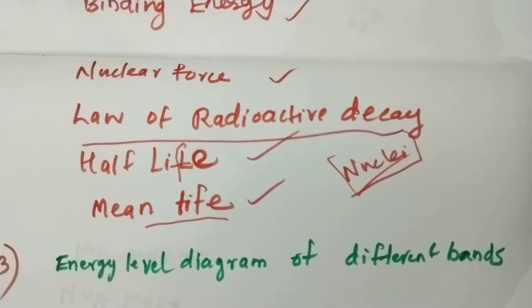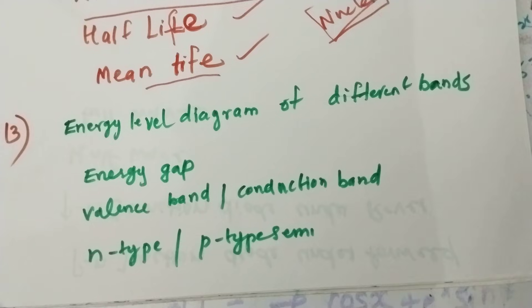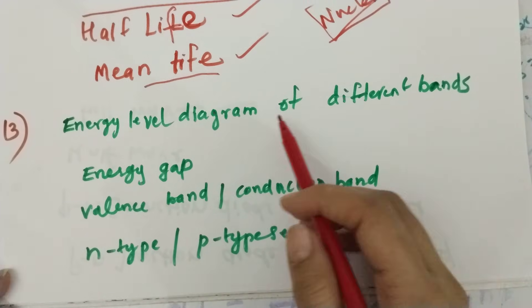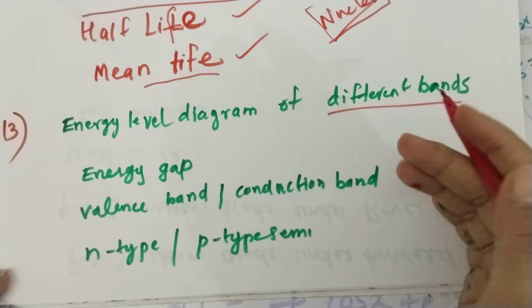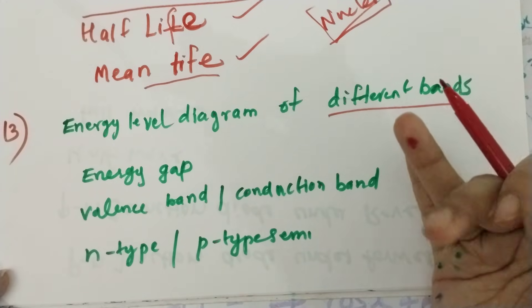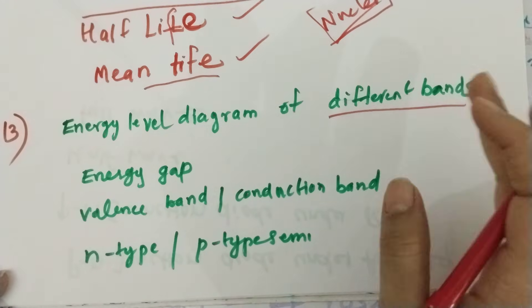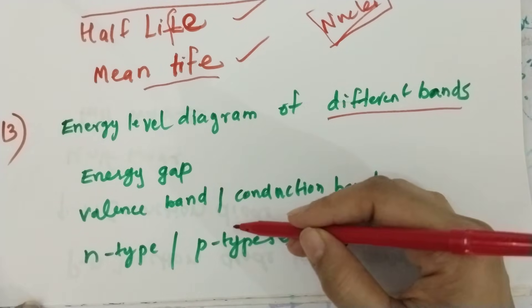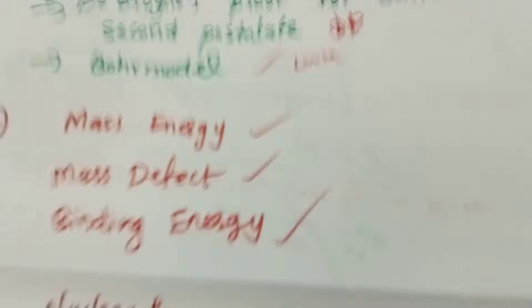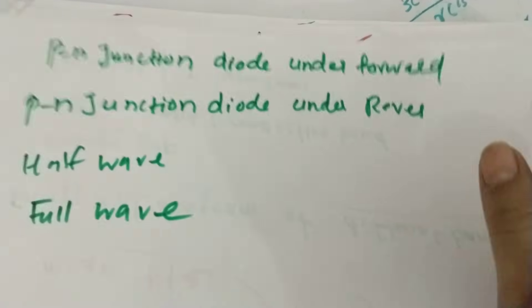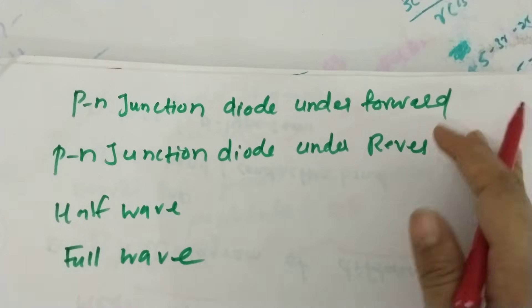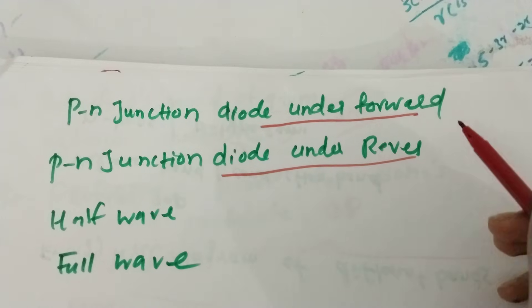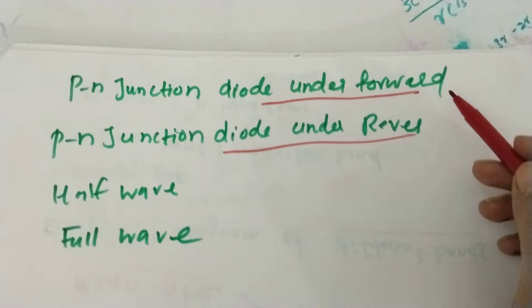Then, semiconductors. In this last chapter, the energy level diagram of different bands — energy gap, valence band, conduction band. This is the definition of the diagram. Valence band, conduction band, energy gap, N-type semiconductor, P-type semiconductor. PN junction diode under forward bias. PN junction diode under reverse bias — this is the graph.